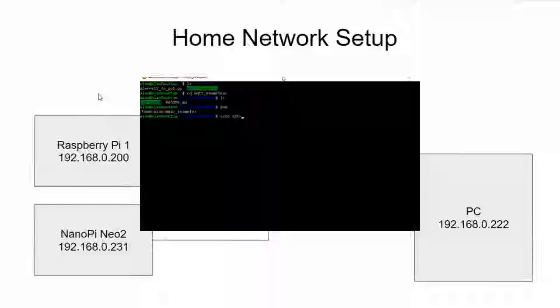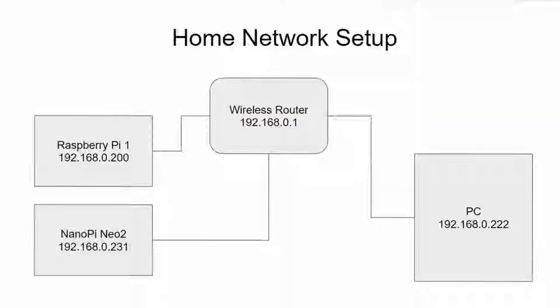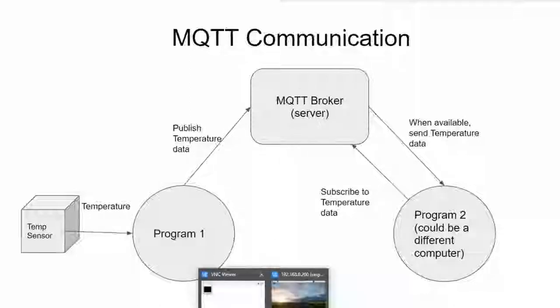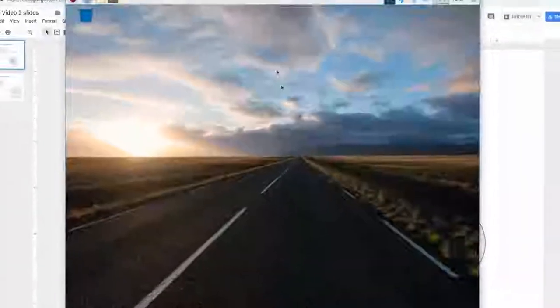The more familiar you are with using Linux, the better off you'll be. So let's get started. The first thing we're going to do is install the MQTT broker. Let's switch over to the Raspberry Pi desktop. I have a freshly installed version of Raspbian OS — the latest release from November 13th, 2018 — and I have it set up with the VNC network client so I can use remote desktop and record it.